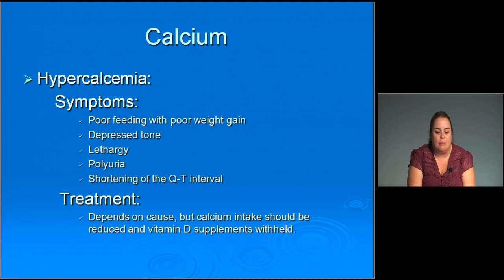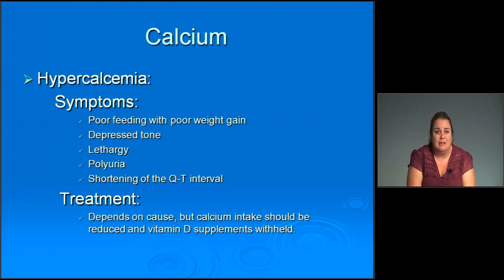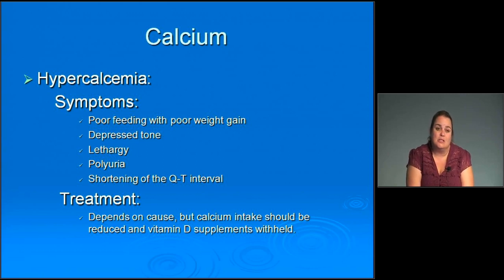Hypercalcemia symptoms are poor feeding with poor weight gain, depressed tone, lethargy, polyuria, and shortening of the QT interval on ECG. Treatment depends on the cause but includes reducing calcium intake in TPN and holding back on vitamin D supplements, since vitamin D and calcium work together — cutting back on vitamin D should help calcium levels drop.